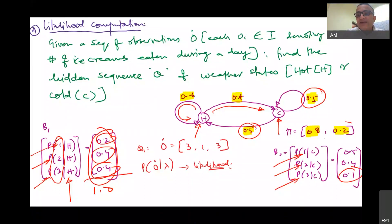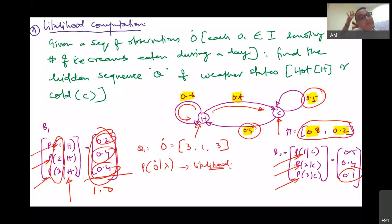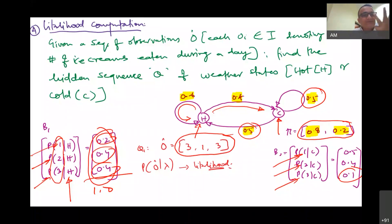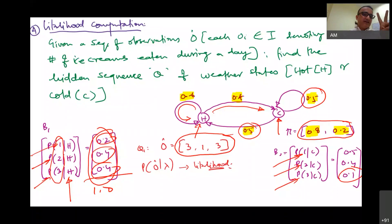The initial state vector is π = [0.8, 0.2], meaning if I pick any random day out of 365 days, the chance of it being a hot day is 80% — four times more likely than it being a cold day. Now the question is: if the observed sequence is 3, 1, 3 — meaning three ice creams on day one, one ice cream on day two, and three ice creams on day three — how likely is it that this sequence of events occurred?